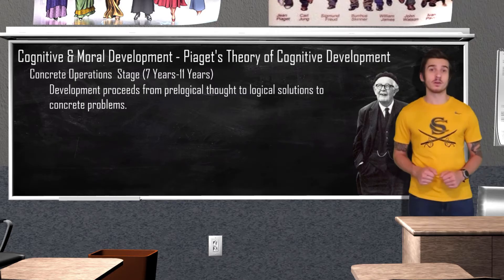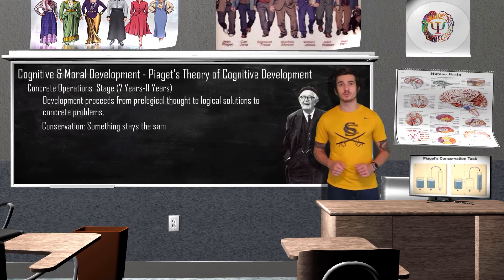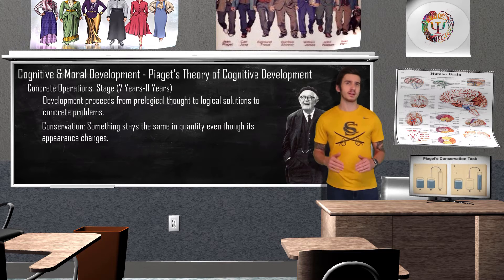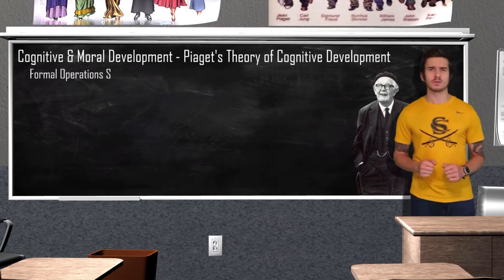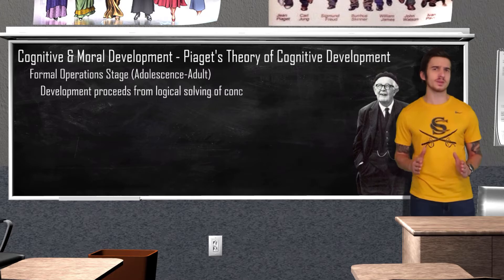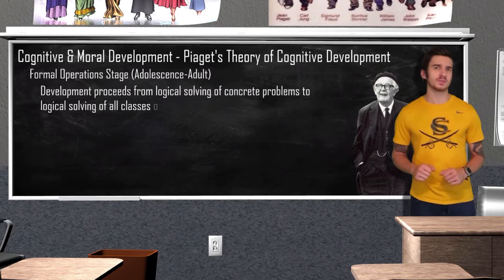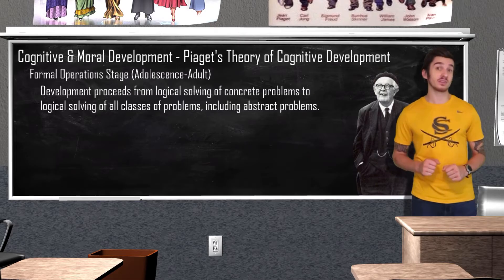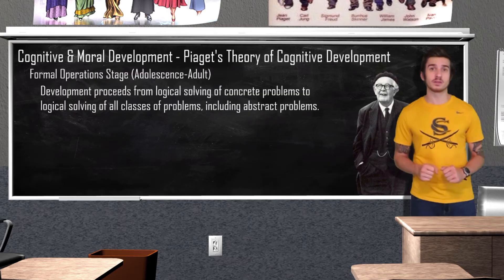The child also starts to understand conservation, which refers to the logical thinking ability that allows a person to determine that a certain quantity remains the same despite adjustments of the container or shape. In the final stage of Piaget's theory — the formal operations stage — starting in adolescence and lasting throughout adulthood, we can logically solve all types of problems, think scientifically, and think in abstract terms.